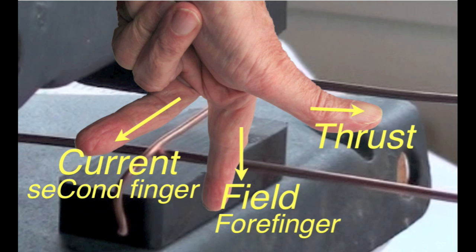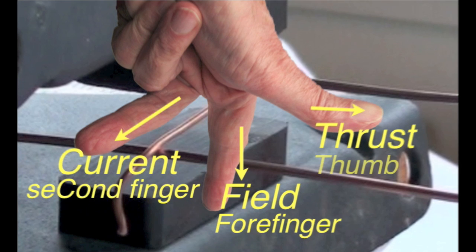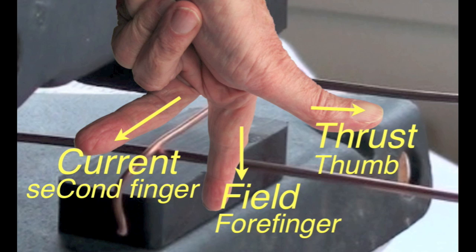And finally, the thumb, which is at right angles to both those digits, represents the thrust. That is the direction in which the force acts. And of course, there is a TH in thumb and a TH in thrust.